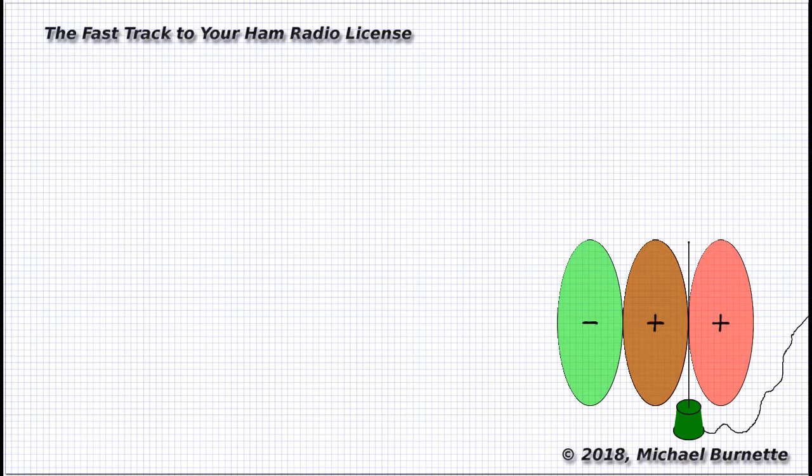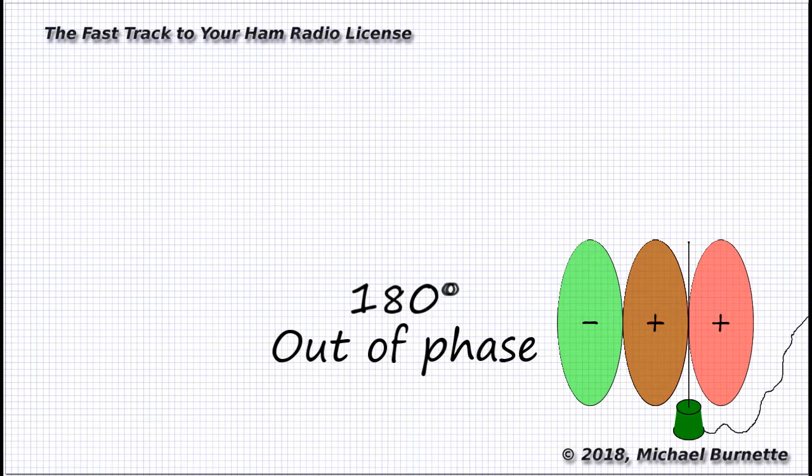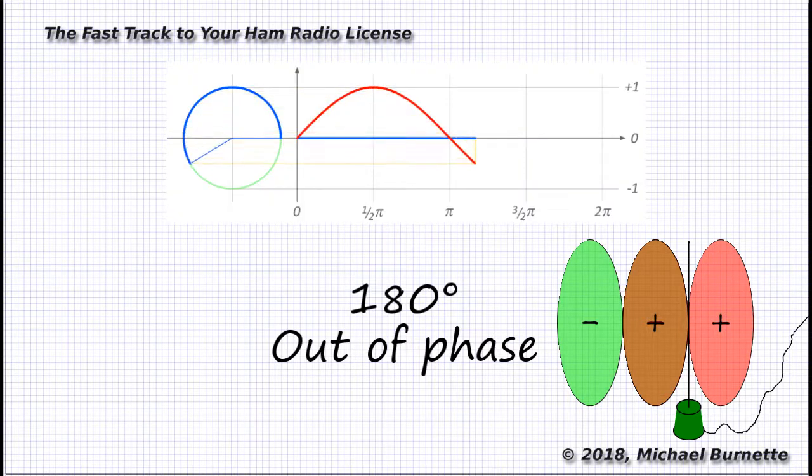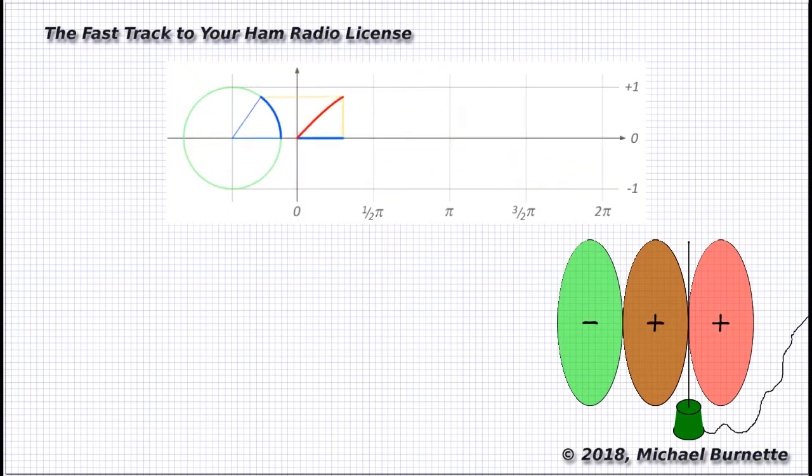Now, the technical term for this is the two waves are out of phase. In fact, these two are 180 degrees out of phase. Remember, that sine wave represents a circle. So a whole cycle is 360 degrees, and a half of a cycle, which is the difference here, is 180 degrees.